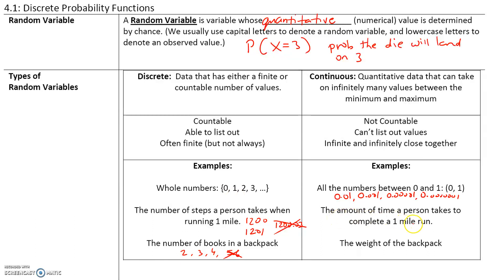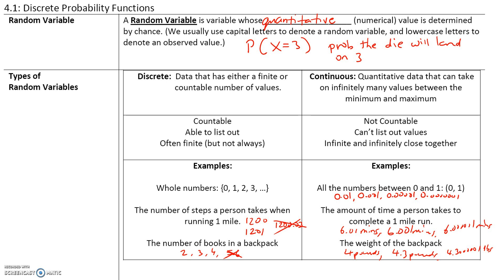Another example: the amount of time a person takes to complete a one-mile run. The person can complete the mile in 6.01 minutes, 6.001 minutes, or 6.00001 minutes if we measure very accurately, and we can just keep going. So there are an infinite number of times a person can take to complete a one-mile run. Same thing with the weight of a backpack — it could weigh 4 pounds, 4.3 pounds, or 4.30001 pounds. In general, a good rule to remember: if something is a whole number and countable, it's most likely discrete. If something can be written as a decimal, it's most likely continuous.